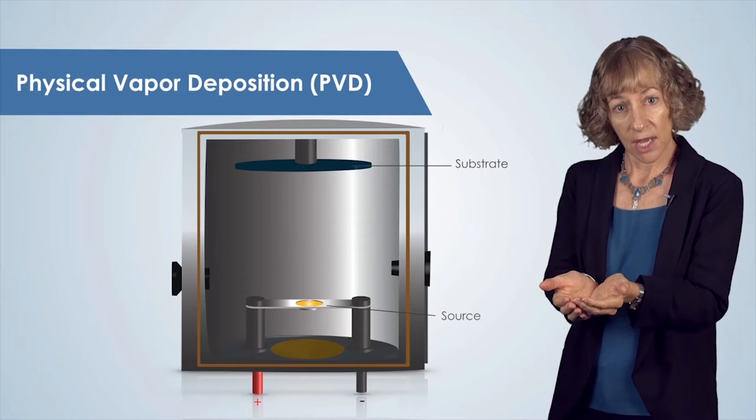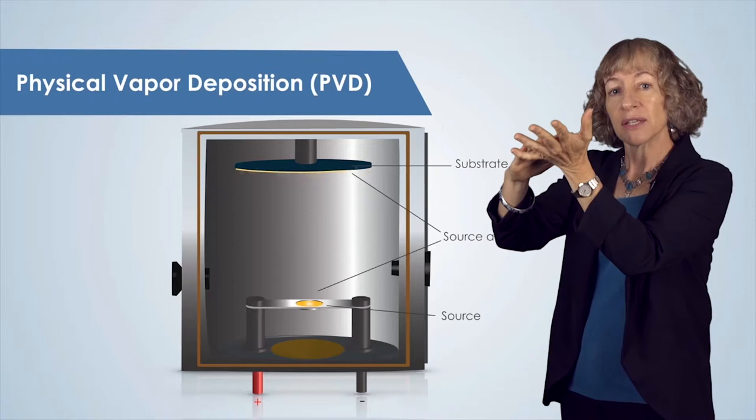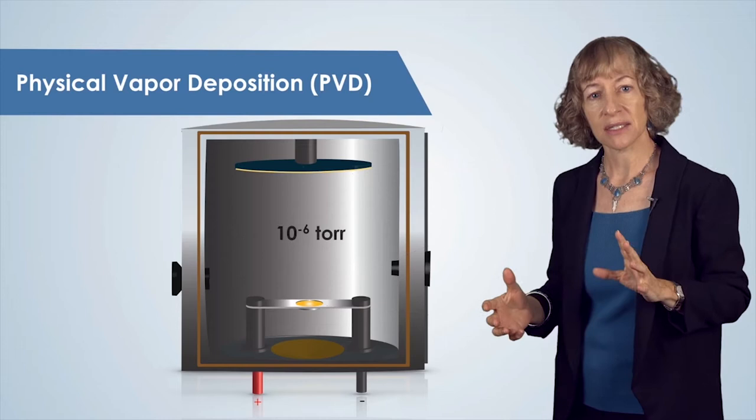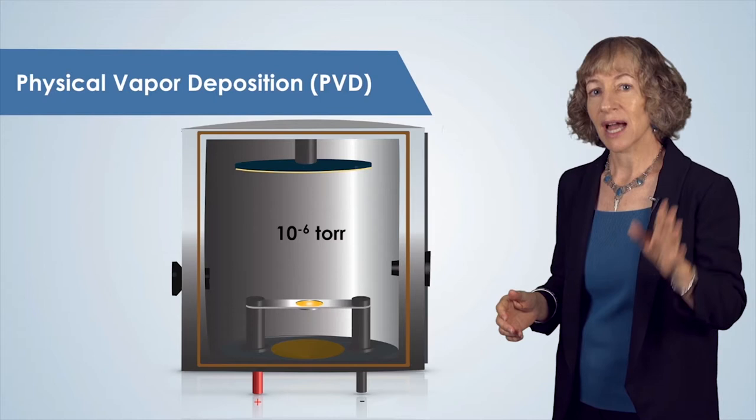The atoms come from an ultra-high purity material that we call the source. Atoms from this source travel through the vacuum in the vacuum chamber and are deposited onto the surface of our substrate. This process is called physical vapor deposition, or PVD, and requires vacuum environments with pressures on the order of 10 to the minus 6 Torr, or equivalently 1.3 times 10 to the minus 4 Pascals.